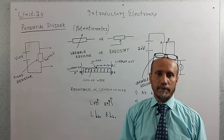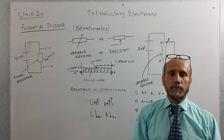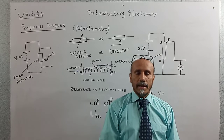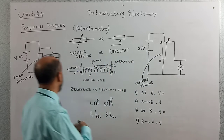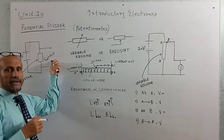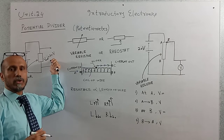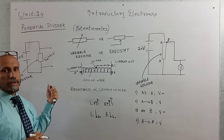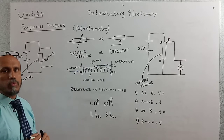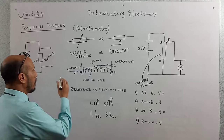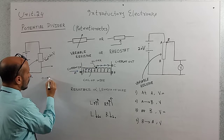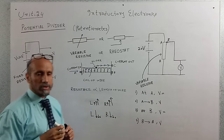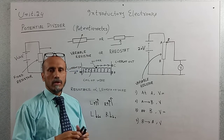In general, when we apply voltage across a fixed resistor, the voltage across the resistor remains the same. This means if we are providing 20 volts across the fixed resistor and we connect a voltmeter, the voltage will be 20 volts. So if we want to change the voltage from 0 to 20 volts, we will use the device called a potentiometer or potential divider.